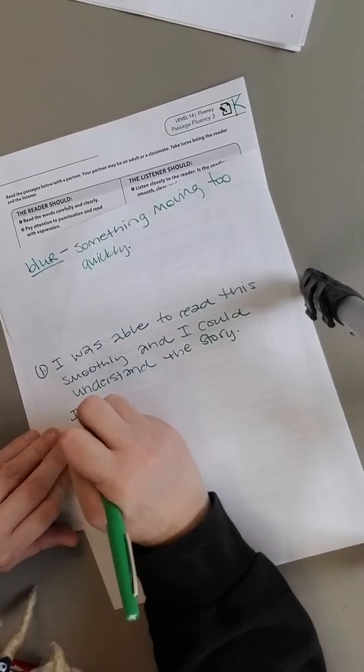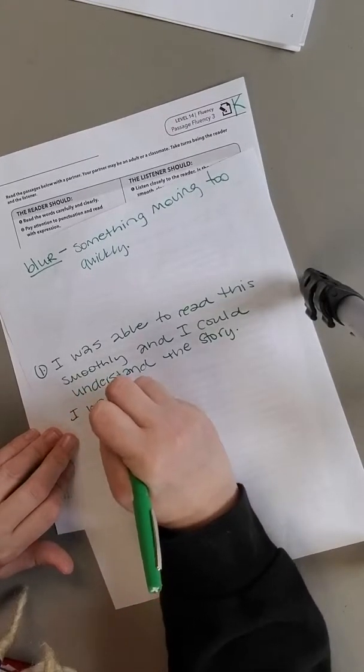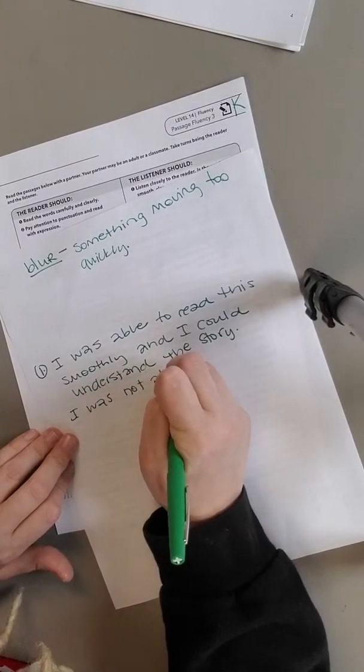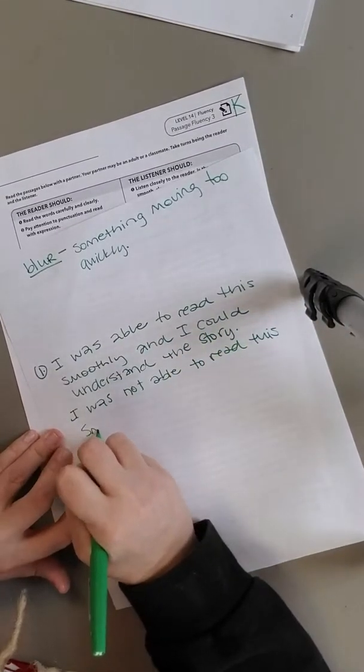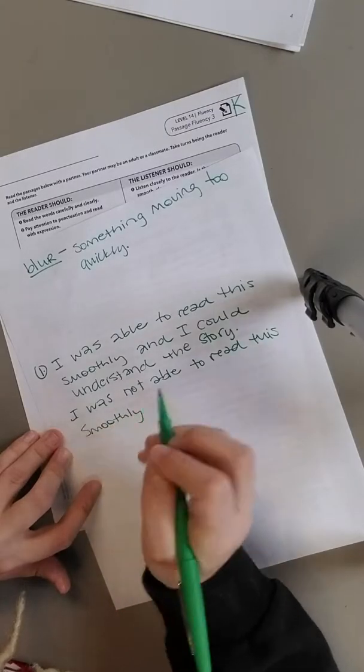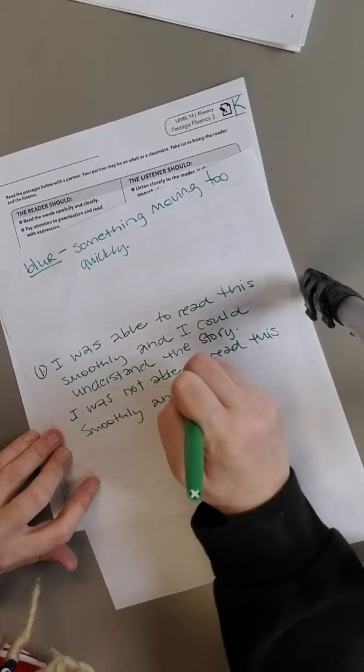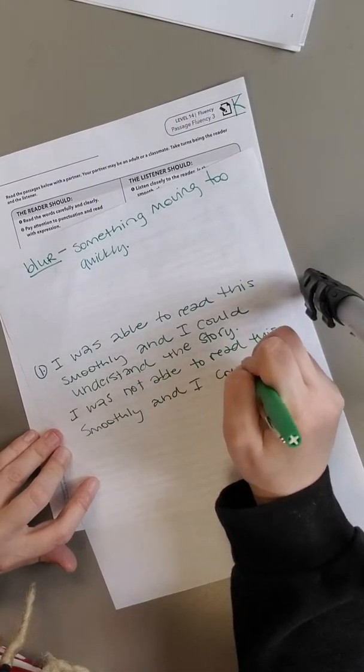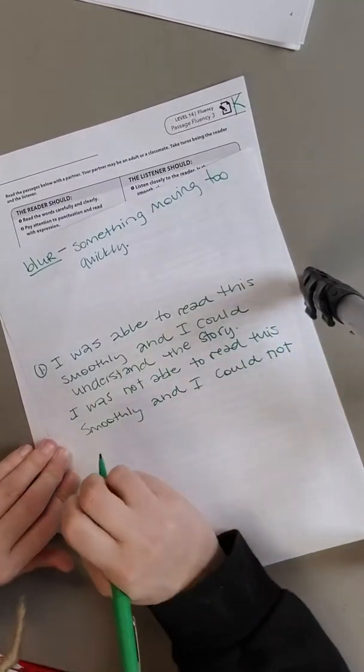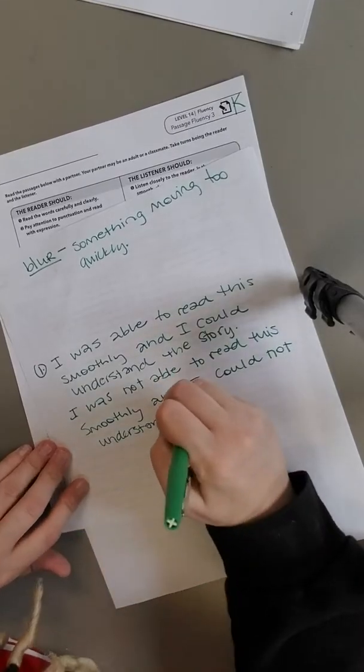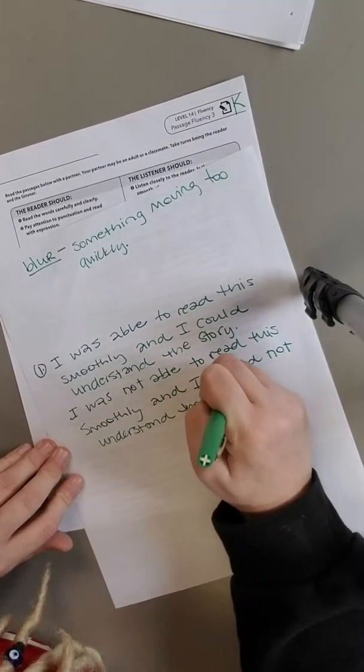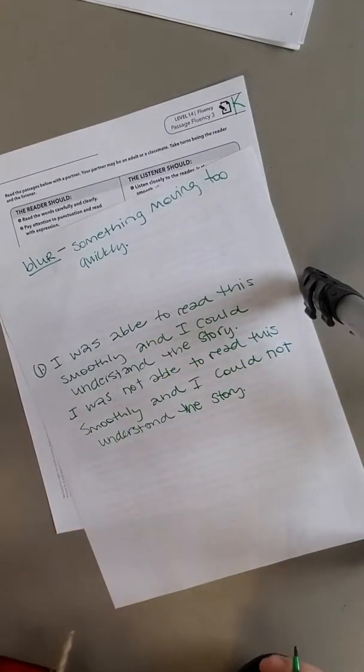So if that's the case, you would write, I was not able to read this smoothly and I could not understand the story. So you're going to pick one of those two depending on whether or not you felt like you could read it easily or whether or not you felt like you could not read it easily.